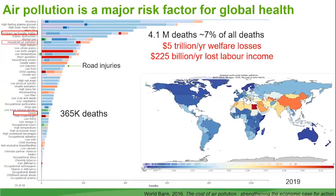What we've learned from the global burden of disease is that air pollution is a major risk factor for global health. We can now put the number of deaths attributed to air pollution in context of other well-known risk factors such as smoking, high body mass index, and alcohol use. Ambient particulate matter accounts for 7% of all deaths, and when we look at all forms of air pollution — particulate matter, household air pollution from solid fuels for cooking, and ozone — that accounts for about 12% of all deaths.